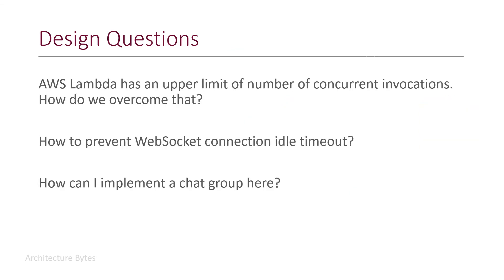Some design questions: AWS Lambda has an upper limit on the number of concurrent invocations — what happens when we reach this upper limit? While AWS Lambda does have an upper limit for concurrent invocations, you can enhance this limit by requesting AWS and explaining your use case. If satisfied, AWS will increase the upper limit for you. How to prevent WebSocket connection idle timeout? If a WebSocket connection remains idle for say 10 minutes or so, it will disconnect. To prevent this, you can send a heartbeat message every five minutes or so, and that will take care of this issue.